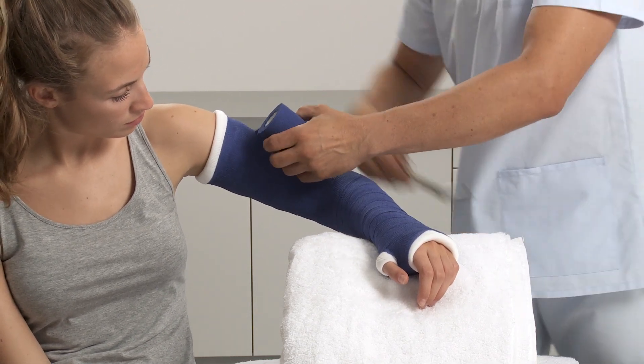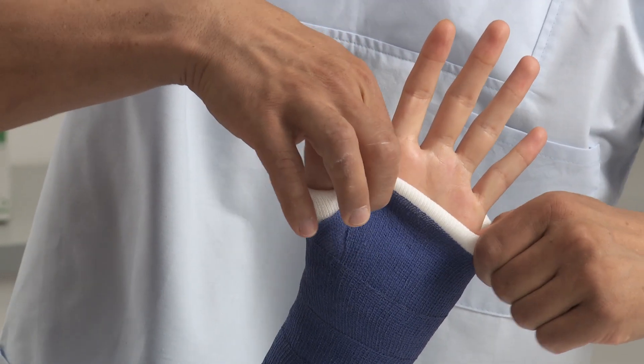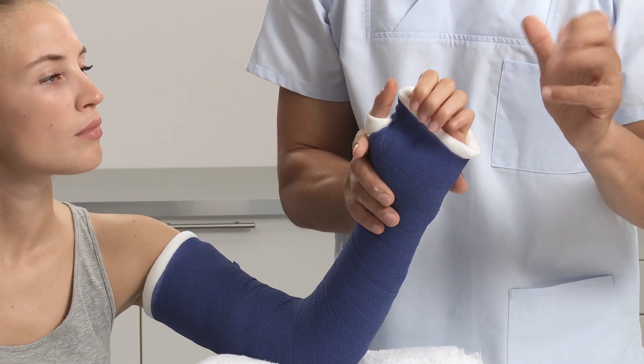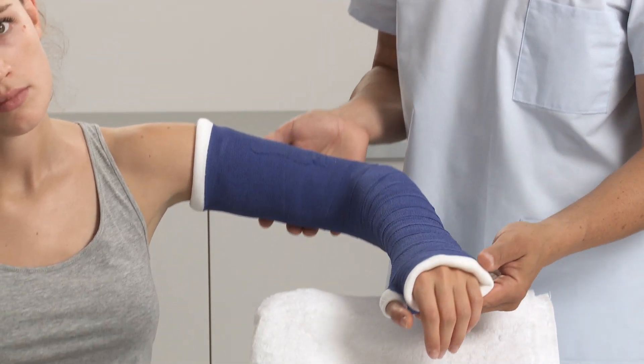Check the desired range of motion and any points that may cause irritation or pressure. After approximately 3 to 5 minutes, the splint is set and the patient can be released. After 24 hours, the splint is fully set.